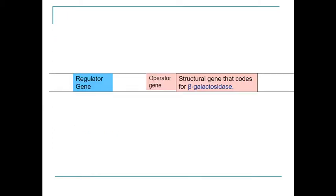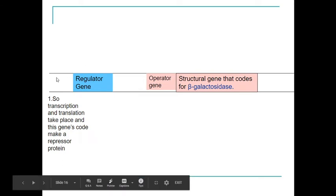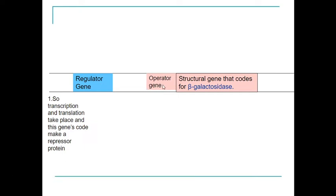Let's look at beta-galactosidase and the lac operon. First of all, transcription and translation take place and the gene's code will make a repressor protein. Here we have the regulator gene, the operator gene, and then the structural gene that codes for beta-galactosidase.